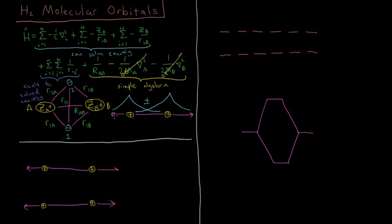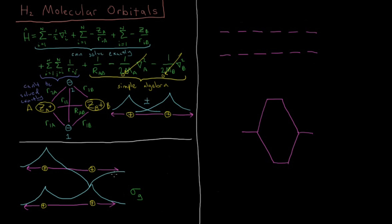Our basis set is the 1s orbital on nucleus A and nucleus B. These combine together, and as we saw previously for H2+, they combine positively and negatively to produce two different orbitals. The positive combination goes up to a peak, down some, then up to a peak again, and decays away — that gives us the sigma-g molecular orbital. The antisymmetric combination takes the difference of the two, reaching zero with a node in the middle, giving us the sigma-u orbital.